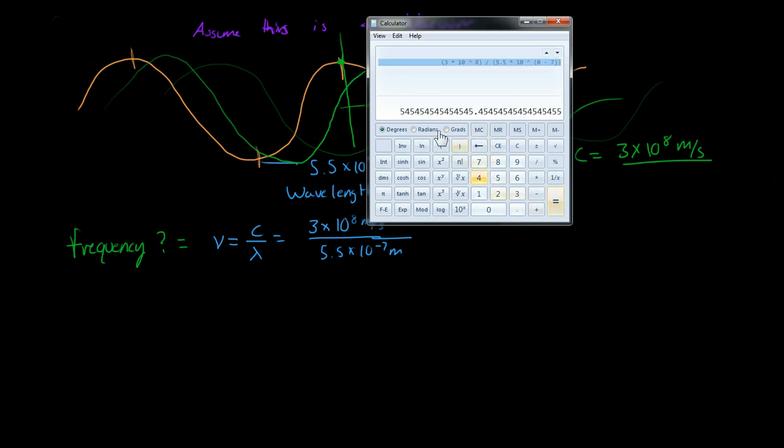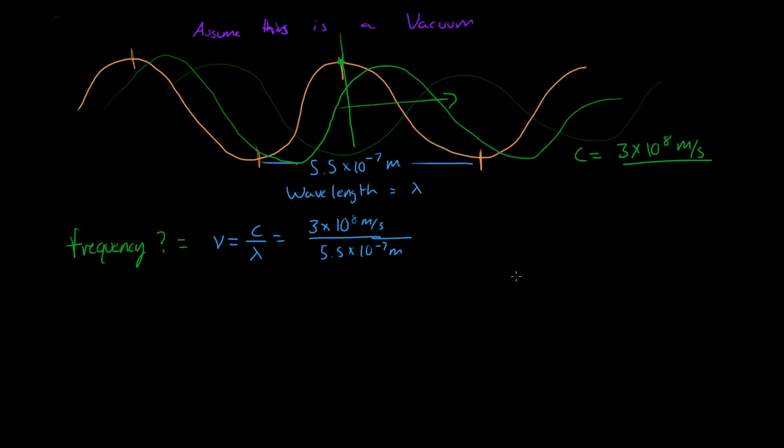Alright, so what do we get? We get a lot of 5's and 4's. So we get 5.45 times 10 to the 14th, 10 to the 14th per second.